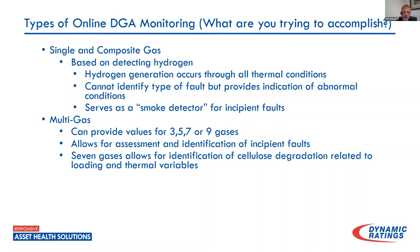With multi-gas monitoring, you can have three, five, seven, or nine gases depending on how much detail you want. It does allow for assessment and identification of faults — I can look and say I've got a really good arcing signature, or I've got PD that is worsening and I'm starting to see development of ethane and then ethylene. With seven gases we get into carbon monoxide and carbon dioxide, which gives me a good idea about cellulose degradation — how much thermal damage am I doing to my solid insulation systems.